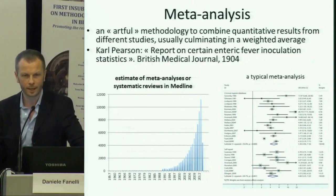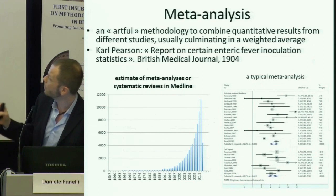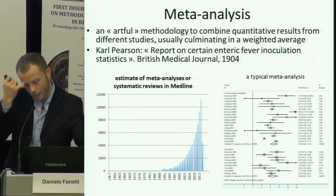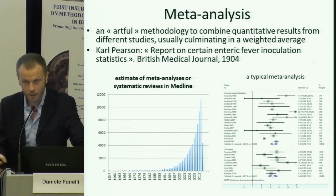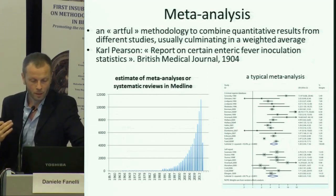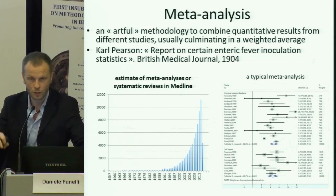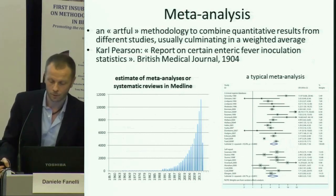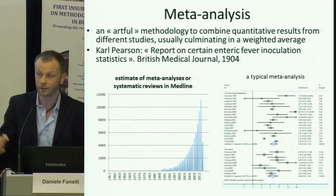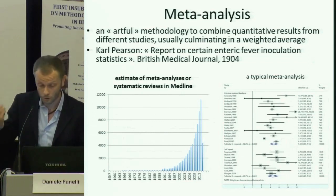We mentioned meta-analysis. Meta-analysis is what I would define as an artful methodology — part art, part research — in which you devise proper ways to sample the literature and combine together quantitative results around a specific research question. It's a way to do research using already published research. Whenever possible, it culminates in producing a weighted average of different results to get an overall quantitative answer to a research question. It's not a new idea — Karl Pearson was already trying to do something like this in 1904 — but it's a methodology that is literally exploding in recent years.